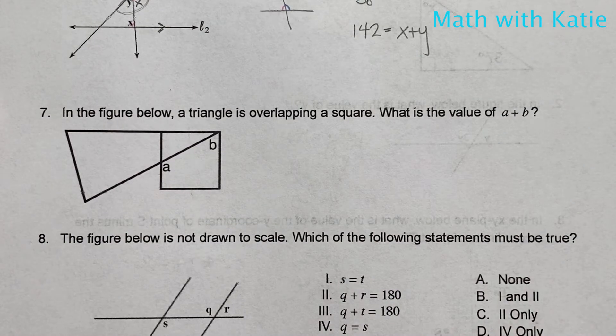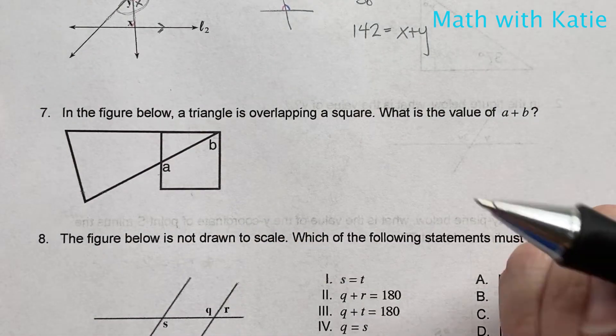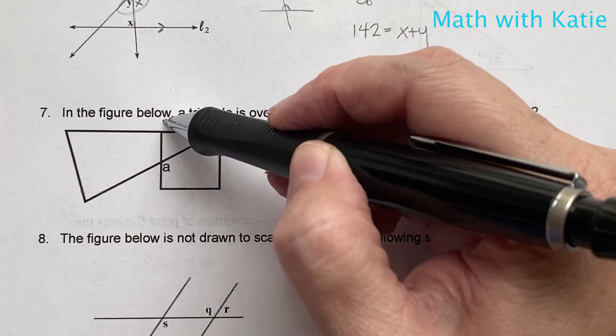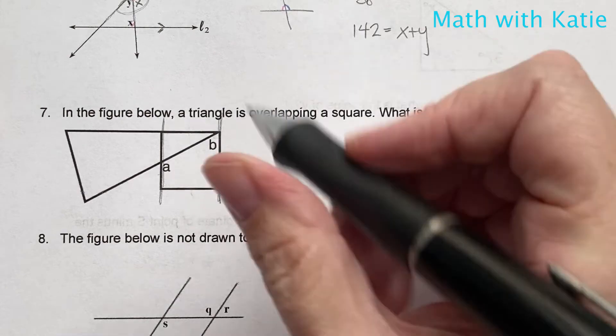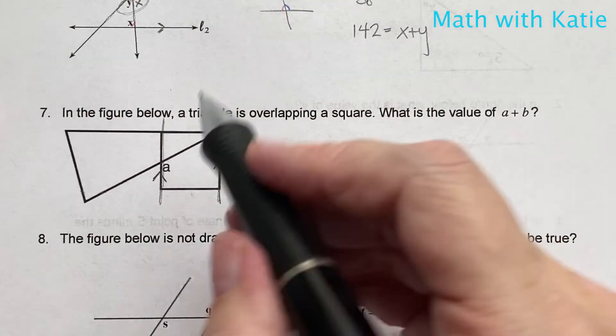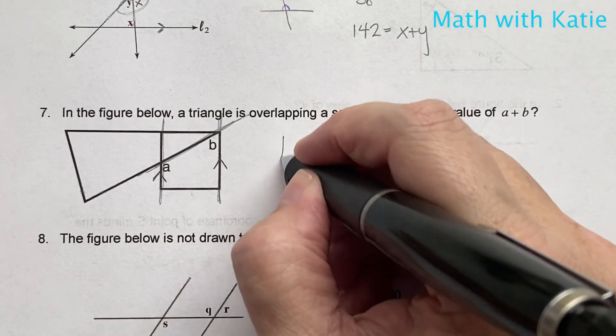In the figure below, a triangle is overlapping a square. What is the value of a plus b? Well, what we know about a square is that its sides are not only congruent to each other, but they are parallel. So let's extend those out so we can see that a little bit better. So two parallel lines, again, cut by a transversal. But this time, instead of having alternate interior angles,